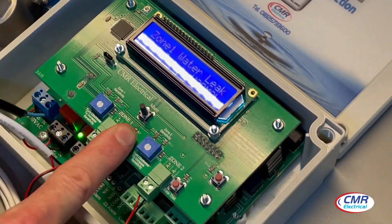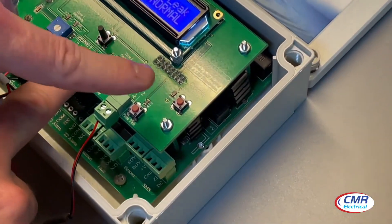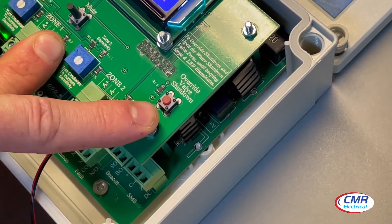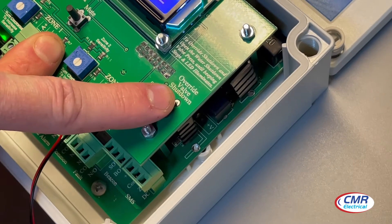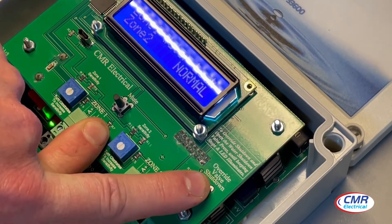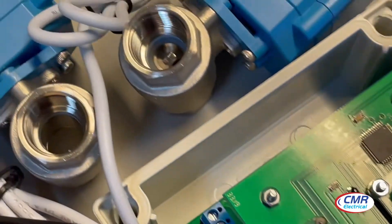Over here, if you need the water supply to come back on, we have an override facility. A little red button there says 'override valve shutdown.' If you hold that down for five to six seconds, it will open the valve back up, allowing the water supply back on.